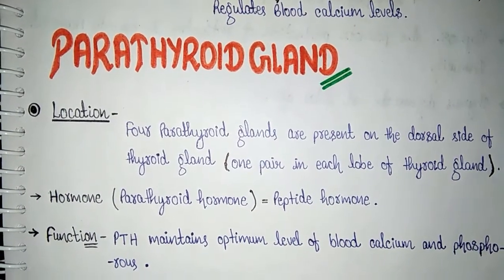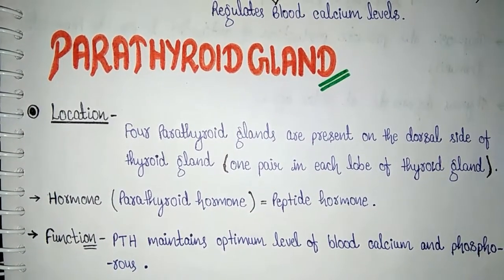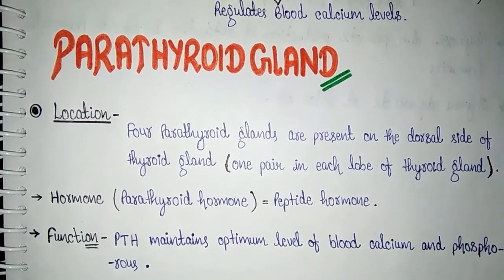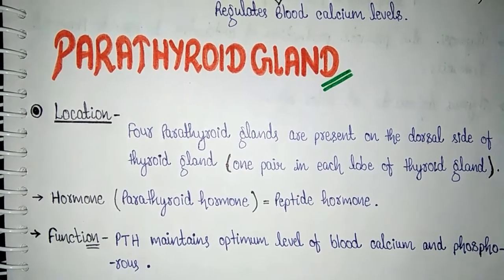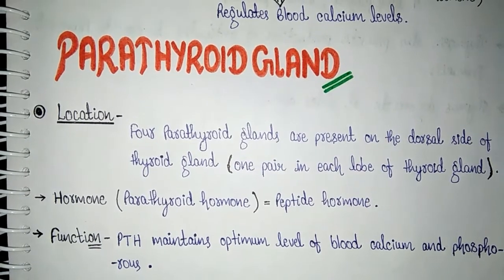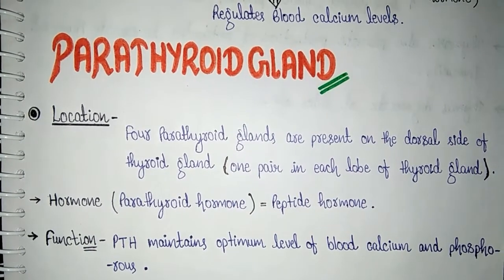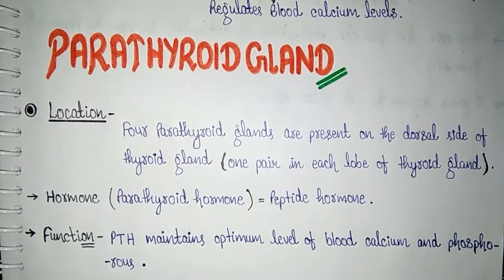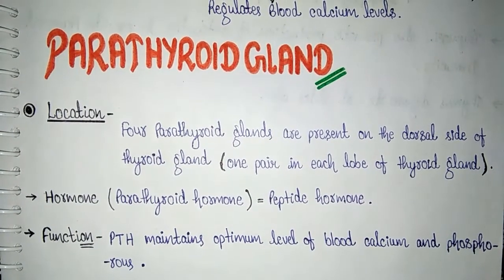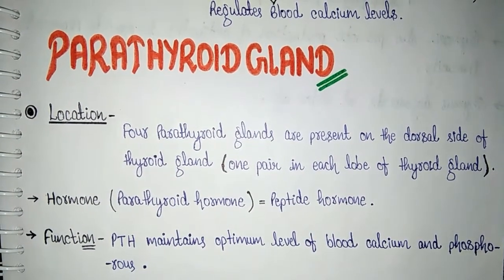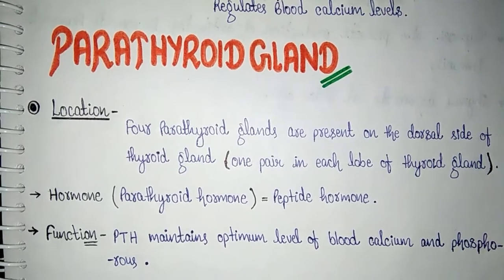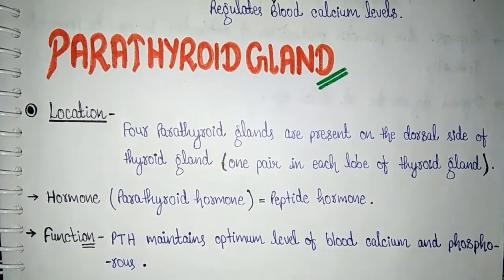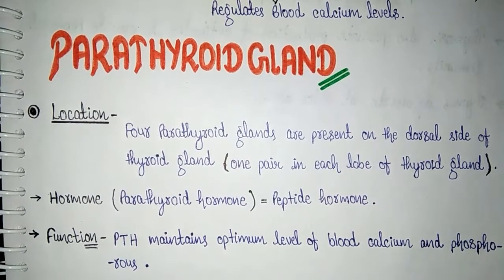Next is the parathyroid gland. Parathyroid glands are 4 in number and are present on the dorsal side — the back region — of the thyroid gland. Since the thyroid gland is a bi-lobed structure, there is one pair of parathyroid glands in each lobe, giving a total of four glands.